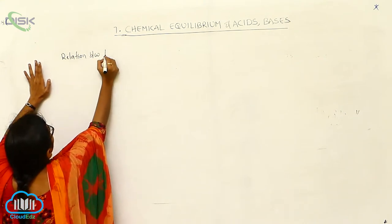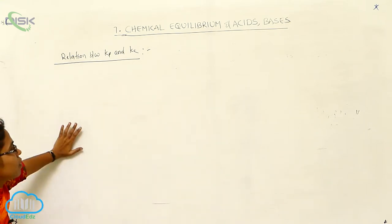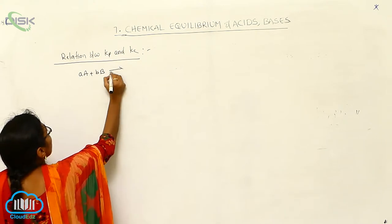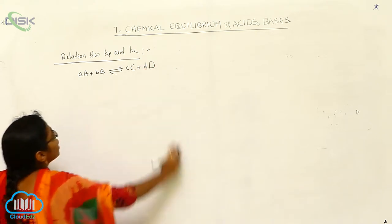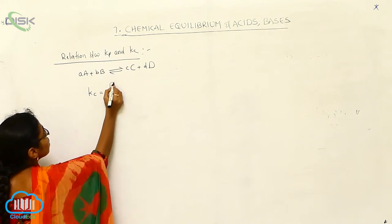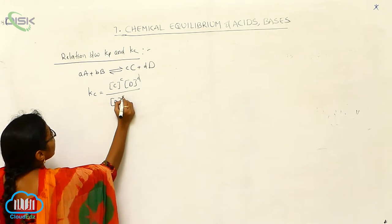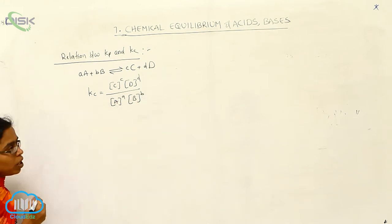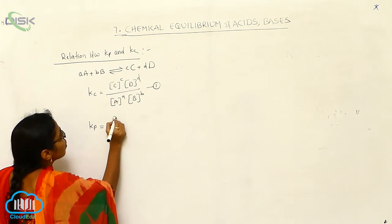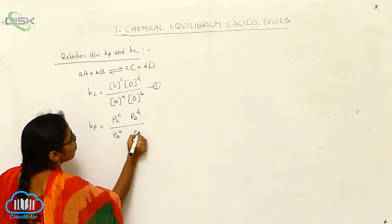Relation between Kp and Kc. For this, I take a general example: aA + bB ⇌ cC + dD, which is a general chemical equilibrium. For this, first write Kc: Kc = [C]^c × [D]^d / ([A]^a × [B]^b) — this is equation 1. Next, write Kp: Kp = (Pc)^c × (Pd)^d / ((Pa)^a × (Pb)^b) — this is equation 2.